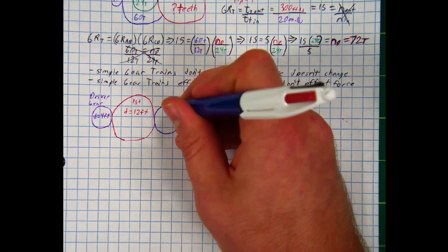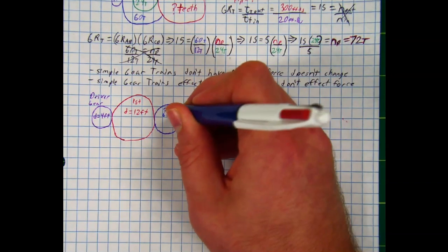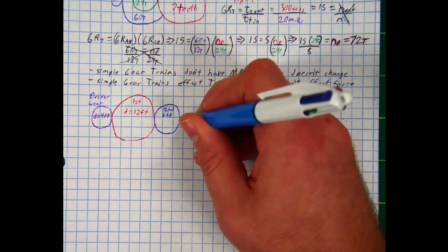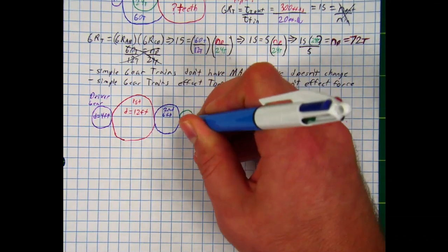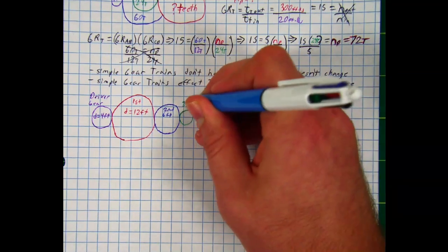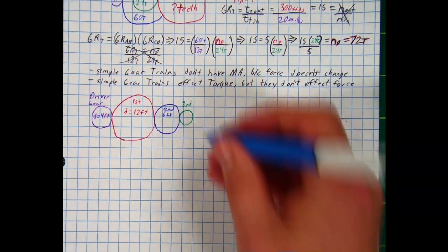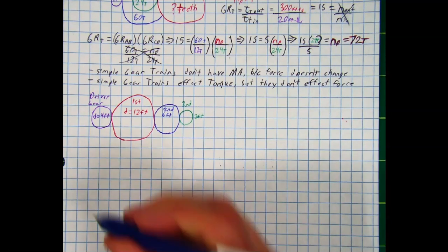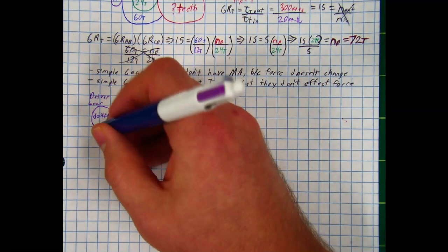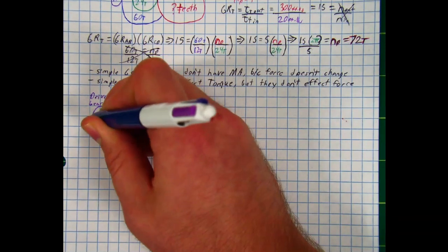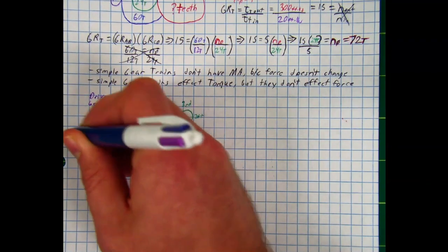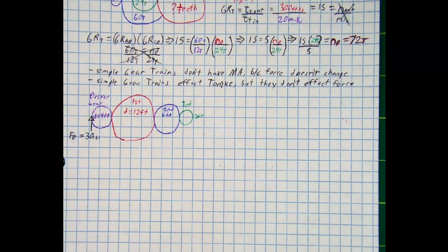Our second gear is a little bigger than the driver gear but smaller than the first gear, with a diameter of 6 feet. Connected to our second gear is our third gear — the smallest of the four — with a diameter of 2 feet. Now, if I apply a force of 30 pounds to the outside edge of the driver gear, what would the force be at the other three gears?